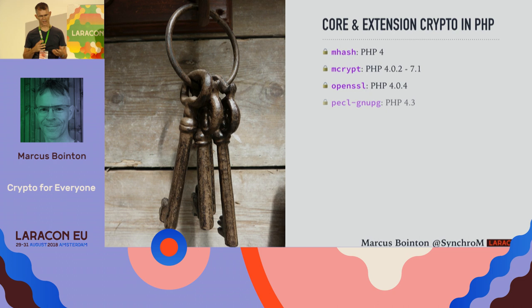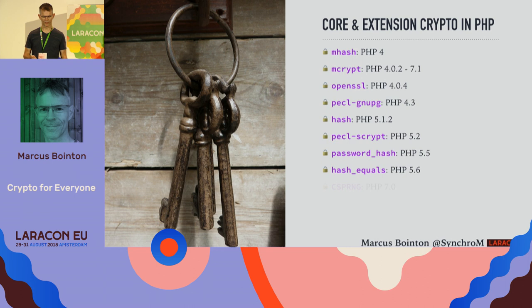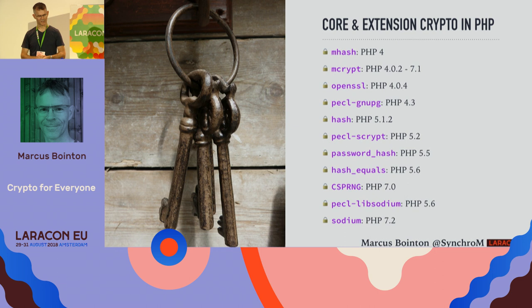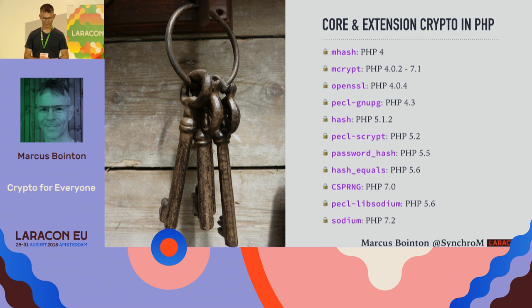These have changed over time. Mcrypt has been around for ages. OpenSSL got big boosts in PHP 5.3 and 5.4. The introduction of password_hash and related functions in PHP 5.5 was really important — it finally brought simple, secure-by-default password hashing into PHP. Before that, people used inappropriate weak hash functions like MD5. WordPress used MD5 for hashing passwords for many years, leading to many appearances in Have I Been Pwned.